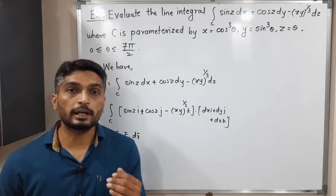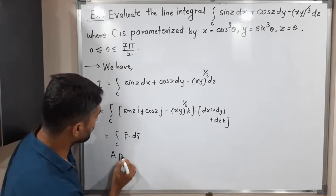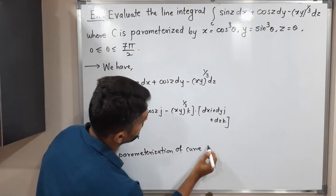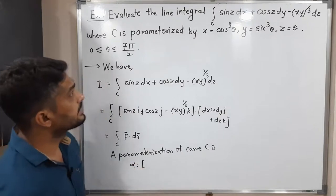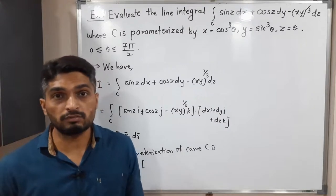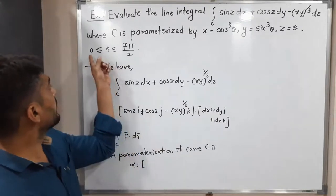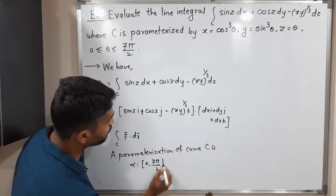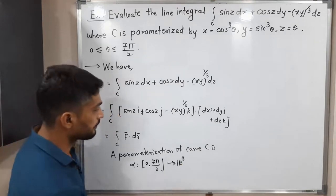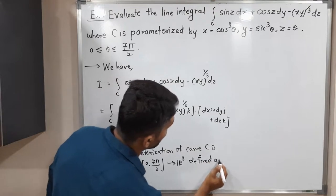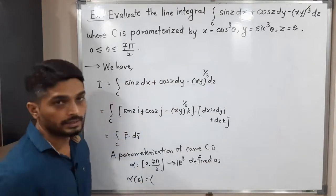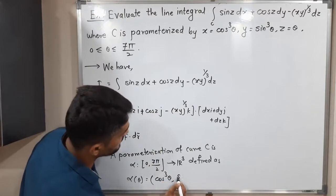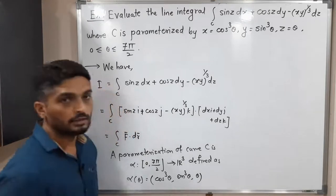So this is the given integral and we have to find its value. First of all, we will try to find its parametrization. The parametrization of curve C is alpha, defined on the closed interval [0, 7π/2] to R³. They have already expressed x, y, z in terms of theta. So alpha(θ) = (cos³θ, sin³θ, θ). This is the parametrization of the given curve.